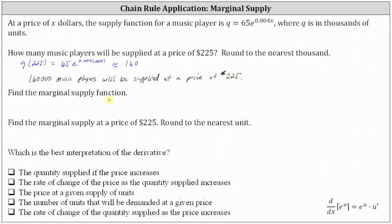Next we're asked to find the marginal supply function, which is the derivative of the supply function. To find this derivative we apply the chain rule using the formula: the derivative of e to the u with respect to x equals e to the u times u prime. So q prime equals the derivative of 65e to the power of 0.004x, which equals 65 times e to the power of 0.004x times 0.004. Since 0.004 times 65 equals 0.26, the marginal supply function is q prime equals 0.26 times e raised to the power of 0.004x.